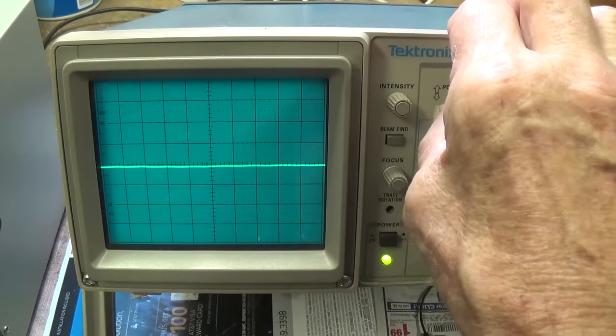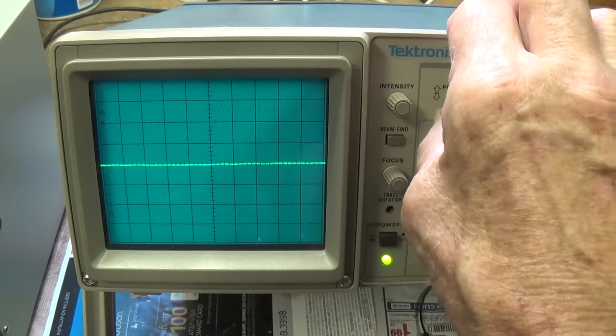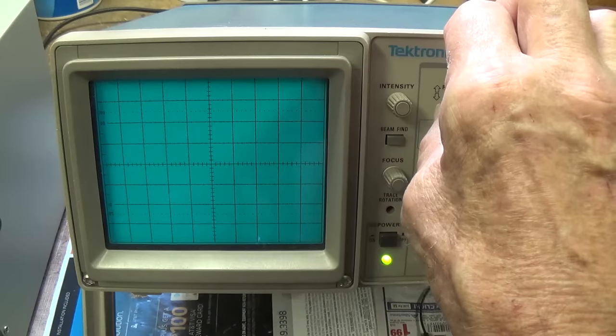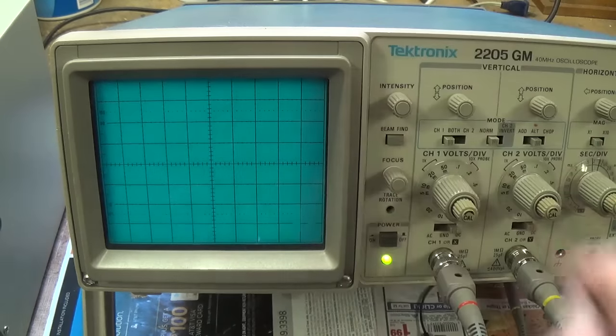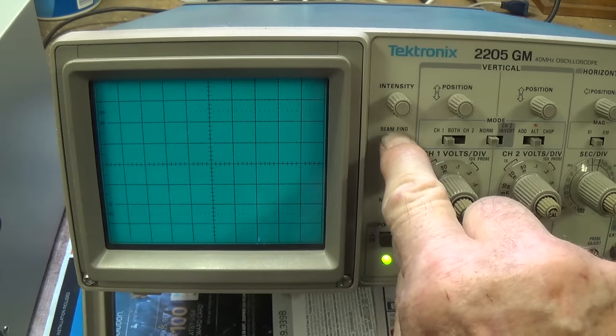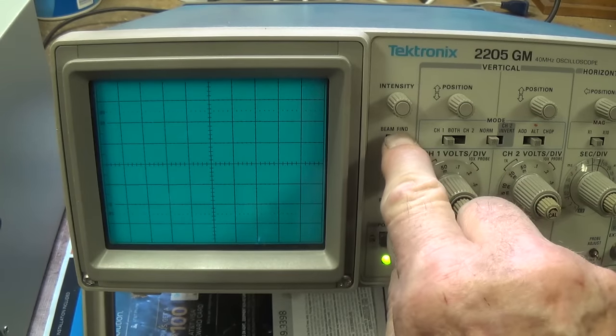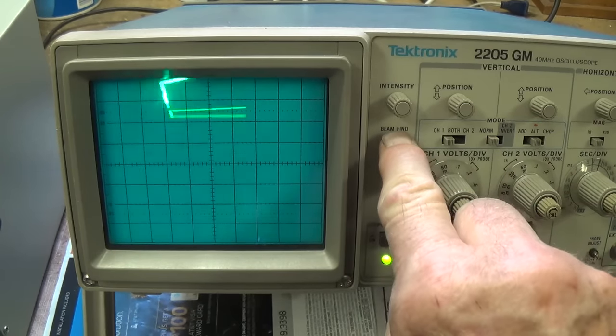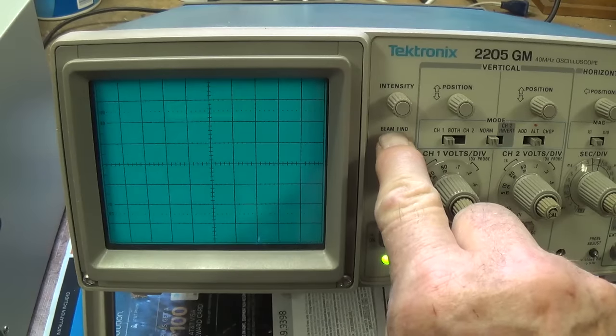Now, what if you don't see the line right now? Well, let's say it's up at the top. Watch this. I'm going to push something called beam find. Isn't that what we're trying to do is find the darn beam? Push it. Look at that. It brings it down from up above. It says, hey, I'm up here.